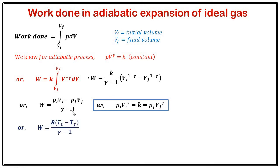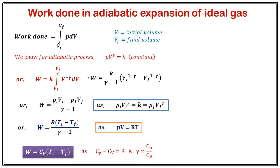Using the ideal gas equation of state pV = RT, we can write pᵢVᵢ = RTᵢ and pf·Vf = RTf. Substituting these values, R becomes a common factor giving R(Tᵢ − Tf)/(γ − 1). Since R = Cp − Cv and γ = Cp/Cv, substituting those values yields work done W = Cv(Tᵢ − Tf). This is the work done in an adiabatic expansion of an ideal gas.